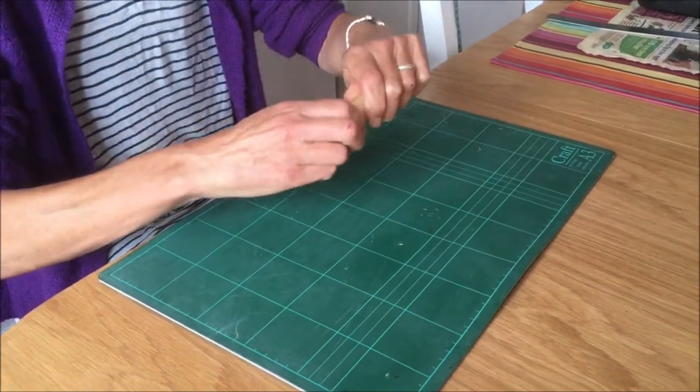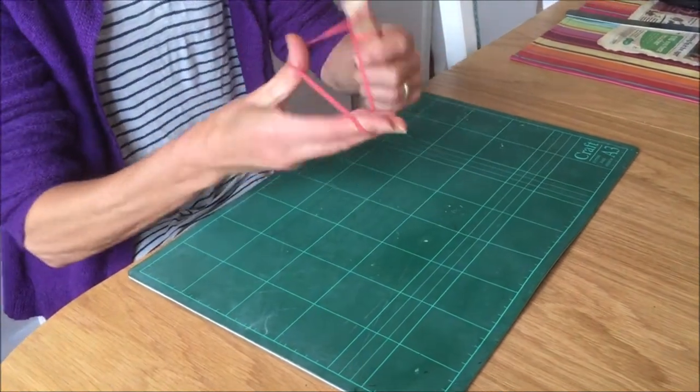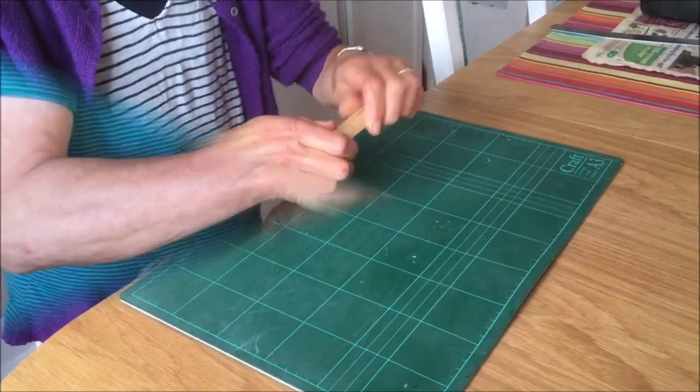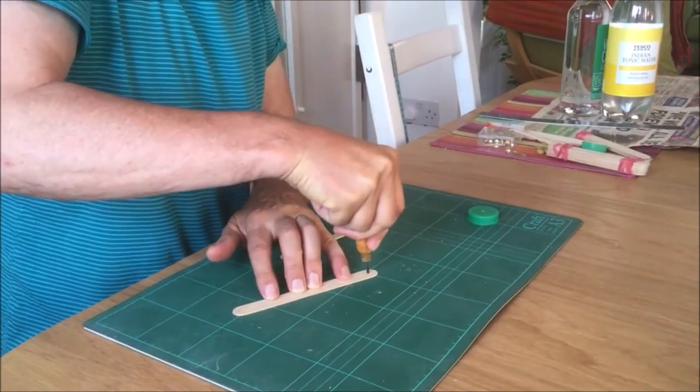You can use glue, the elastic band is easier to put on. Make sure it's tight. Next you make the holes in the top stick.